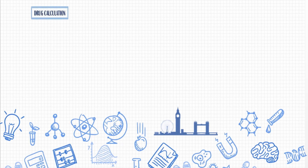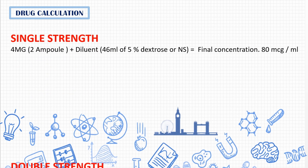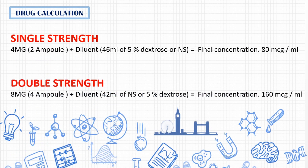Let's see about drug calculation. The doctor may advise single strength or, in case of severe hypotension, double strength. For single strength, take 2 ampoules — that is, 4 mg of drug — with 46 ml of normal saline, giving a final concentration of 80 mcg per ml.